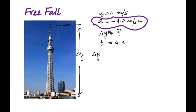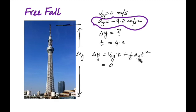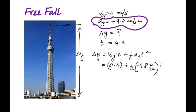Use the equation that has all four terms: Δy = v₀y·t + ½·a·t². The first term is zero times four — that's zero. Then one-half times negative 9.8 times four squared gives you negative 78.4 meters. If asked for the height of the tower, it's positive 78.4 meters, but the displacement is negative because the object is going down.